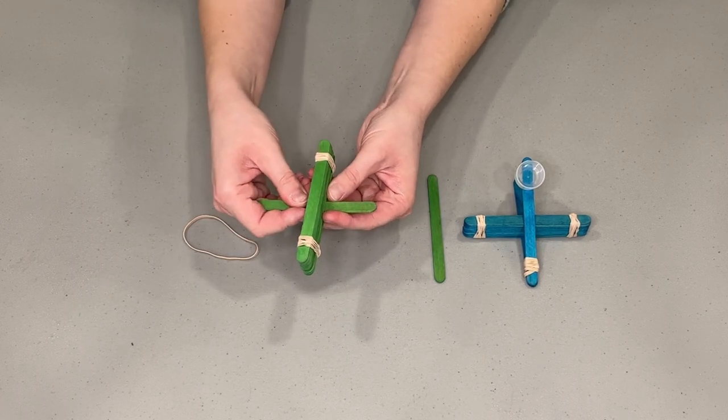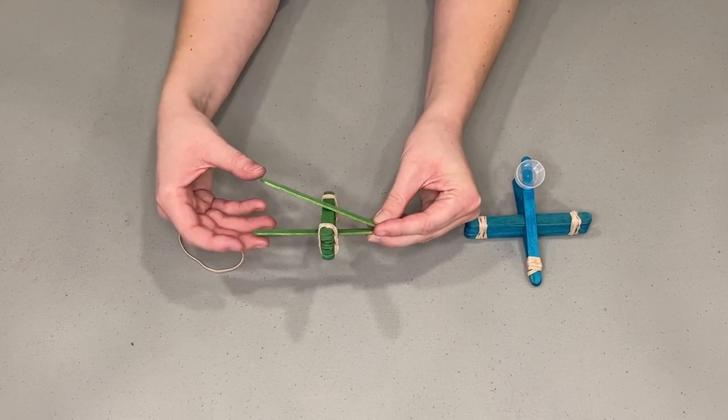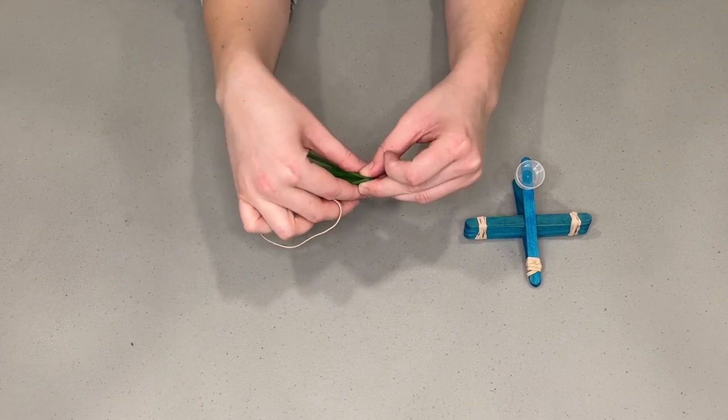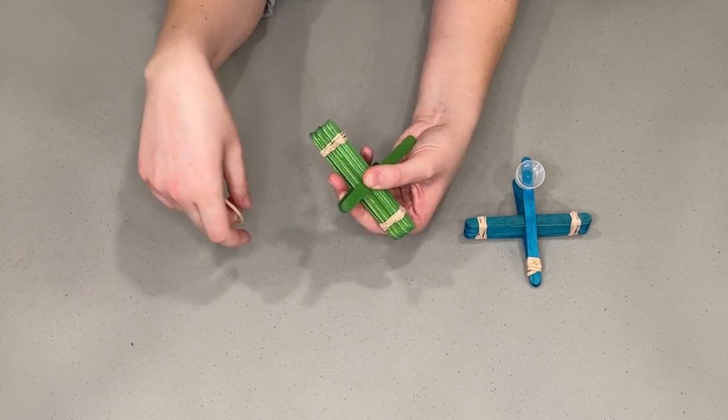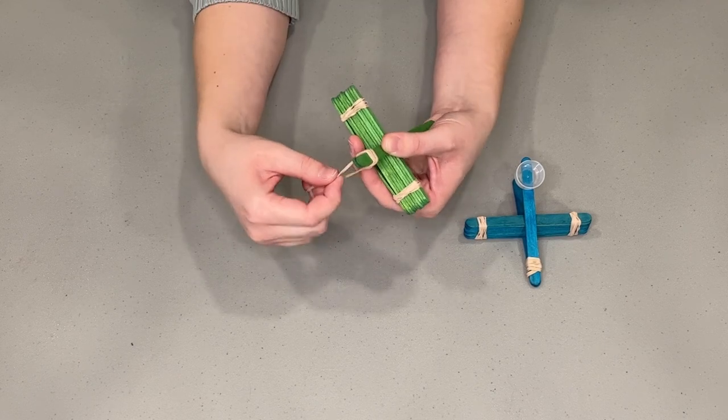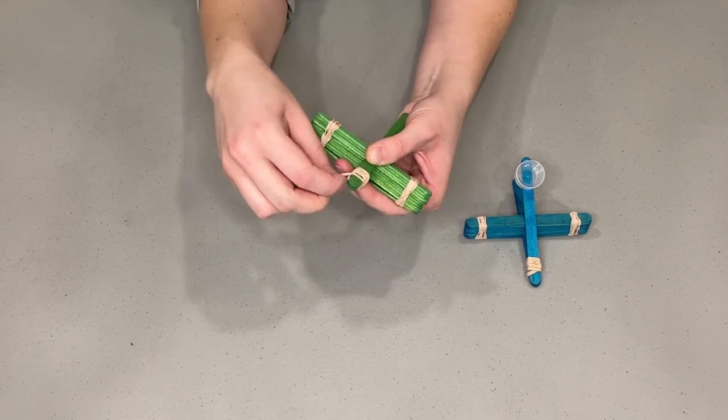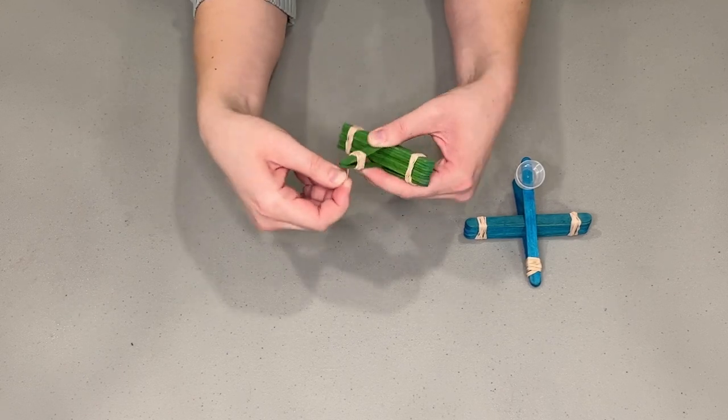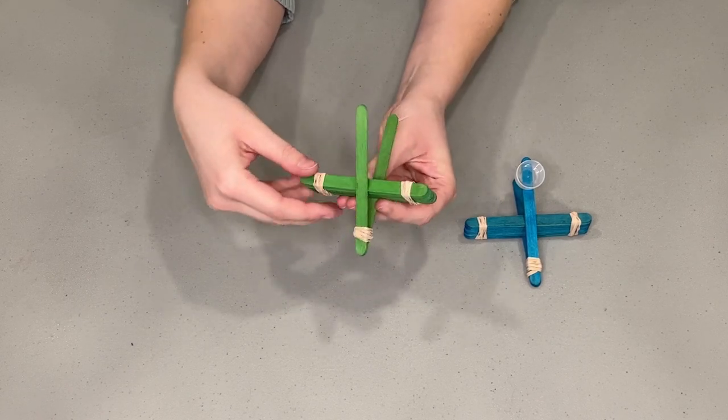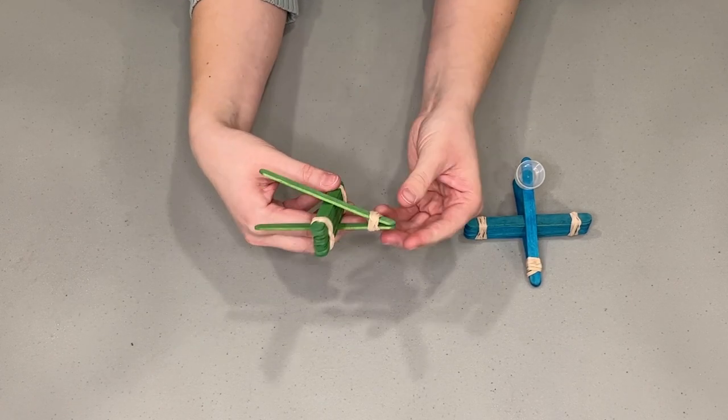And now before we put the elastic on the other end we want to take another popsicle stick and slide it in between the bottom two popsicles like this. And try to get it in the middle. You can adjust it later. And then take another elastic band and put it around this end.